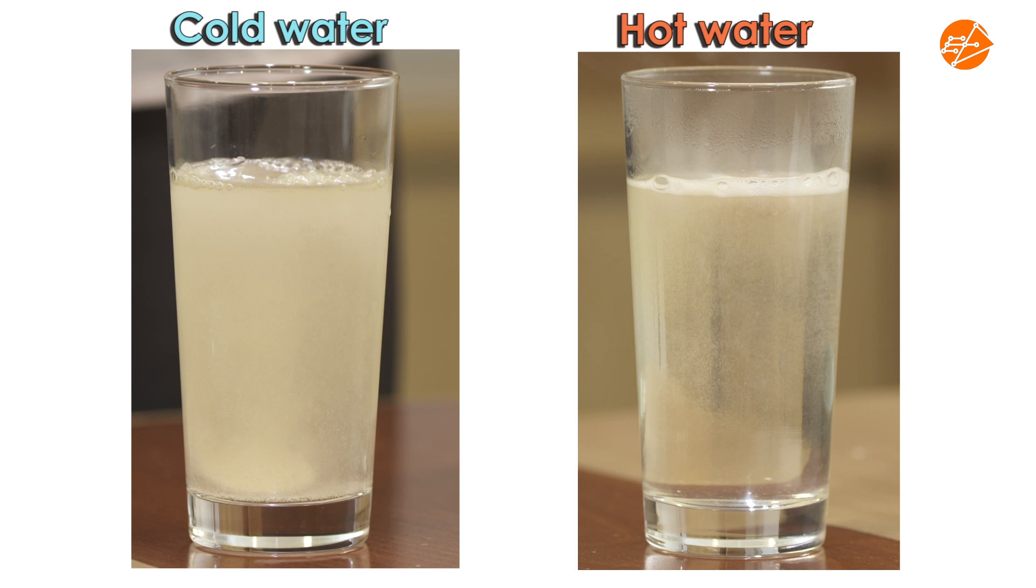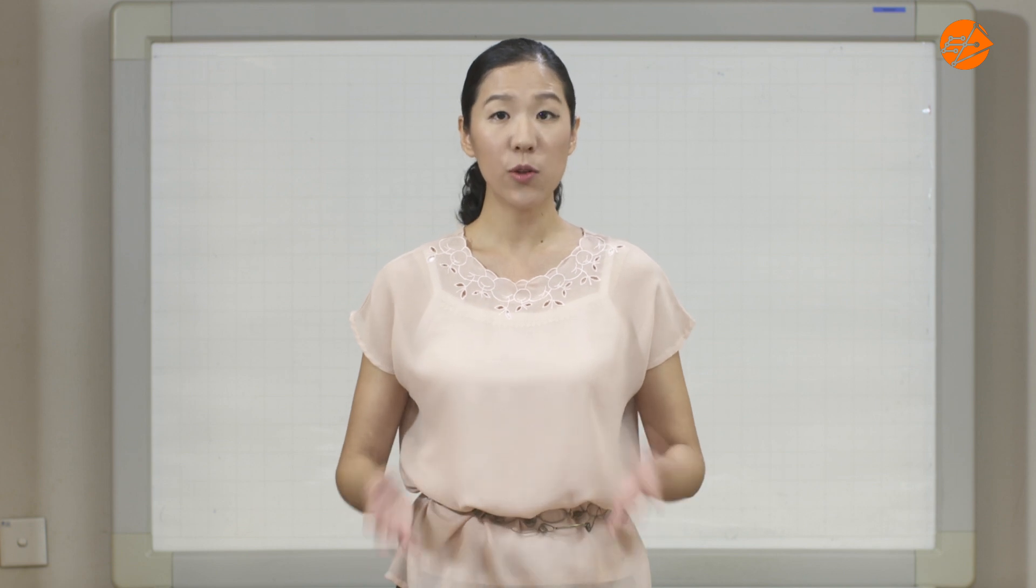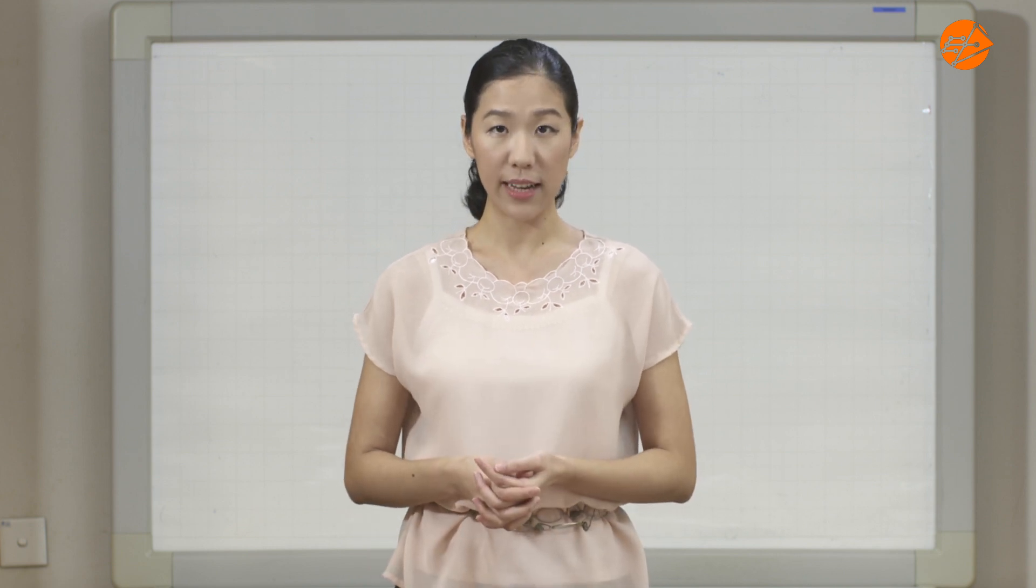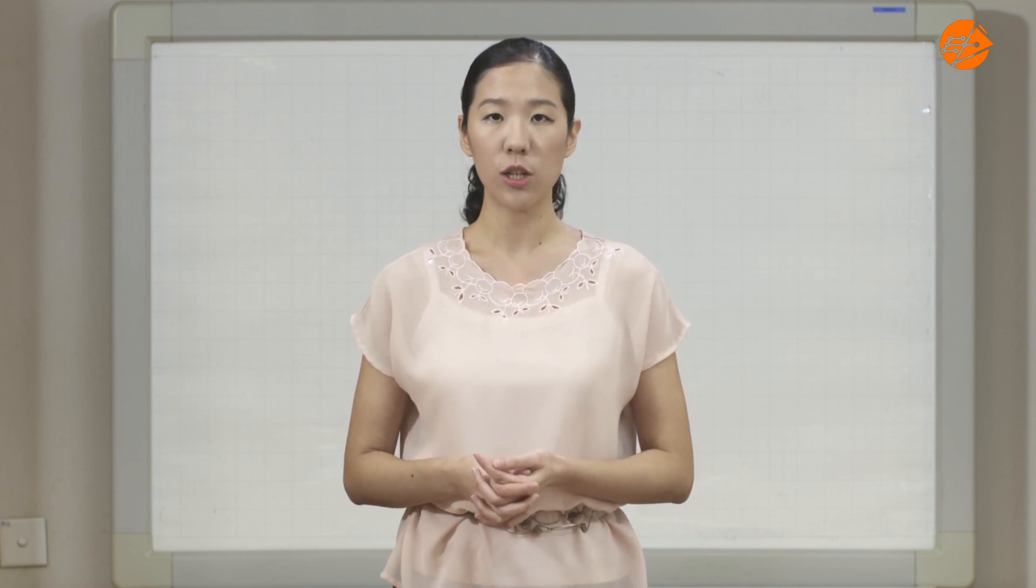For the key reaction to occur, citric acid must first dissolve in water and dissociate to form hydrogen ions. So let's focus on what happens between the citric acid and the water and start by looking at the water molecules.